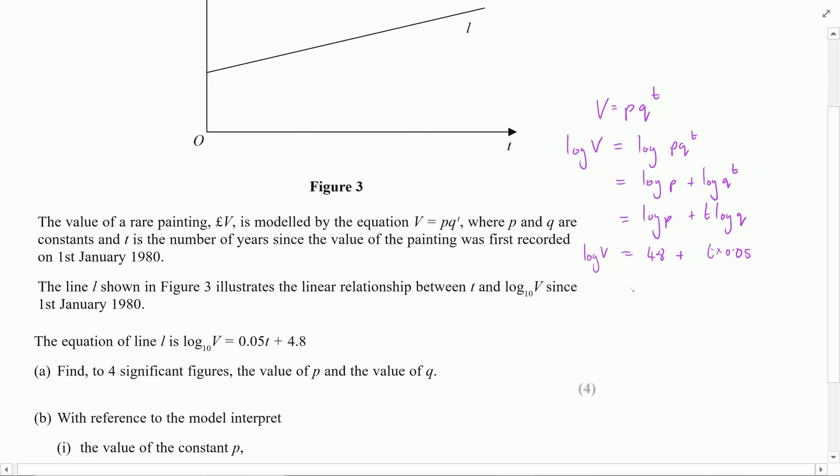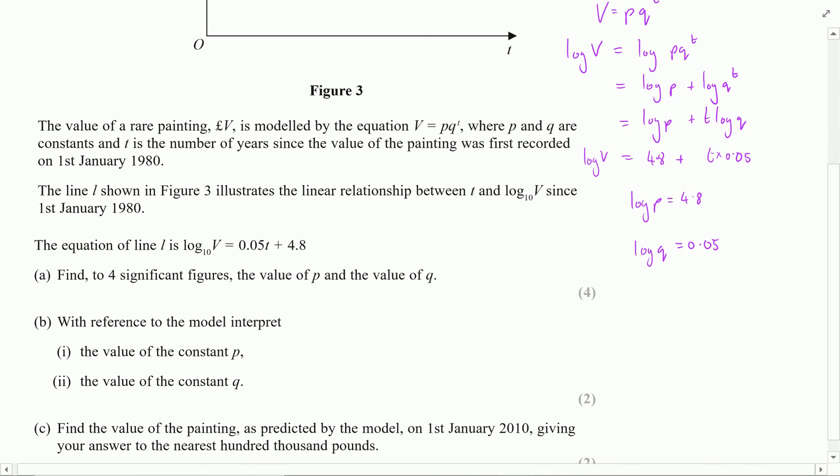So I establish that log p is equal to 4.8 and that log q must be equal to 0.05. Now I can recover those initial values by taking p as 10 to the power of 4.8 and q as 10 to the power of 0.05.